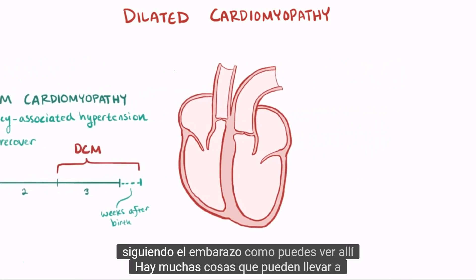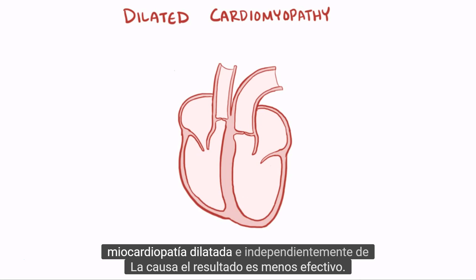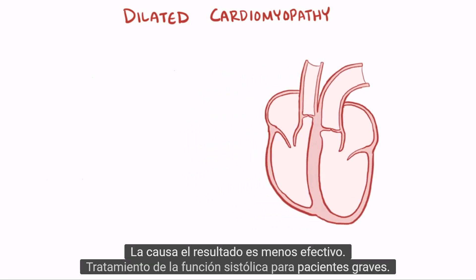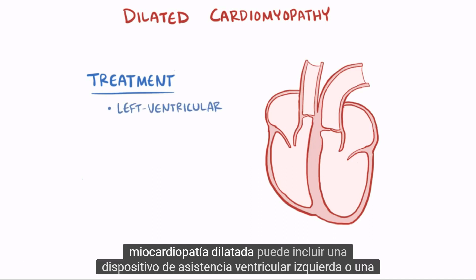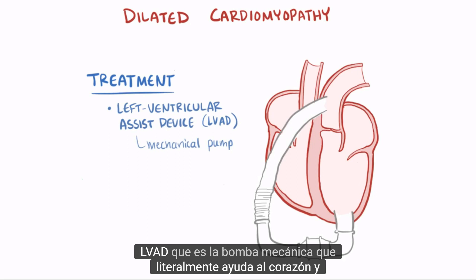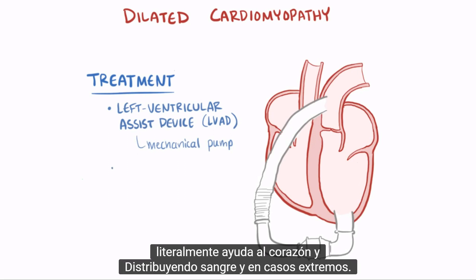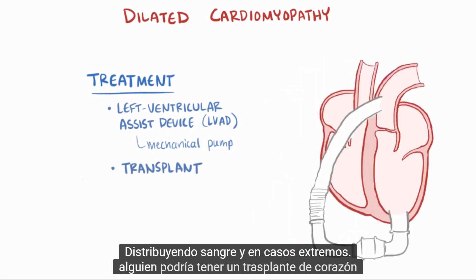As you can see, there are a lot of things that can lead to dilated cardiomyopathy, and regardless of the cause, the outcome is less effective systolic function. Treatment for severe dilated cardiomyopathy can include a left ventricular assist device, or an LVAD, which is a mechanical pump that literally assists the heart in distributing blood, and in extreme cases, someone might have a heart transplant.